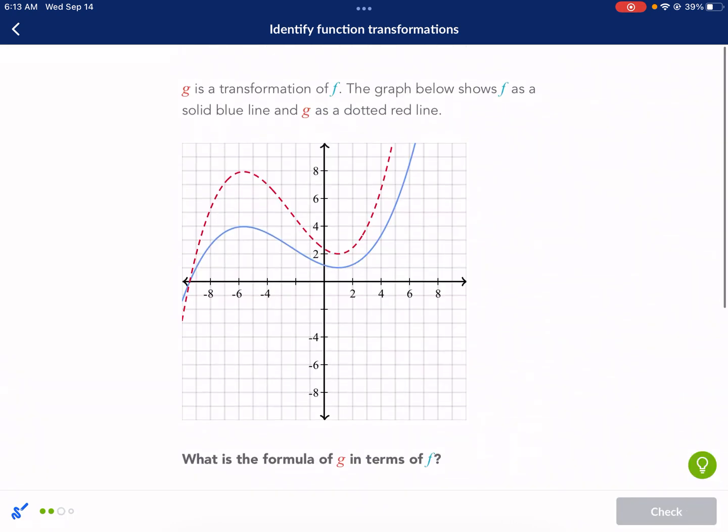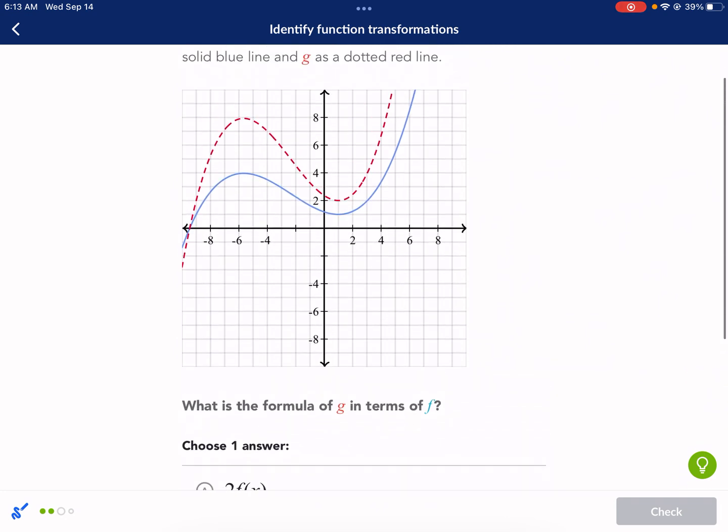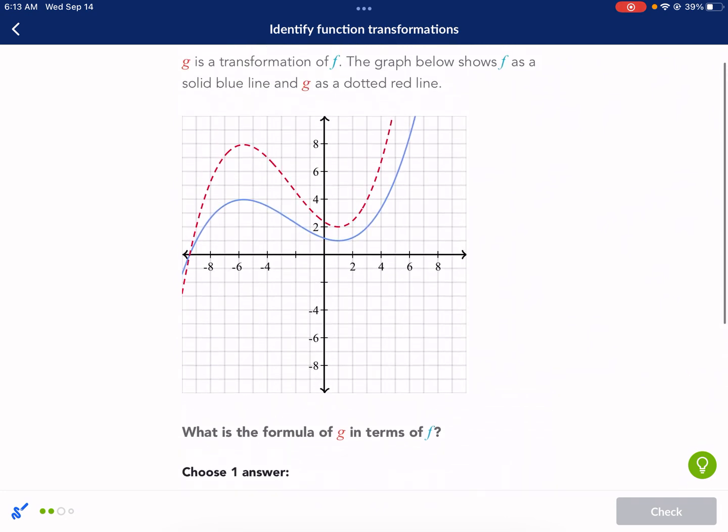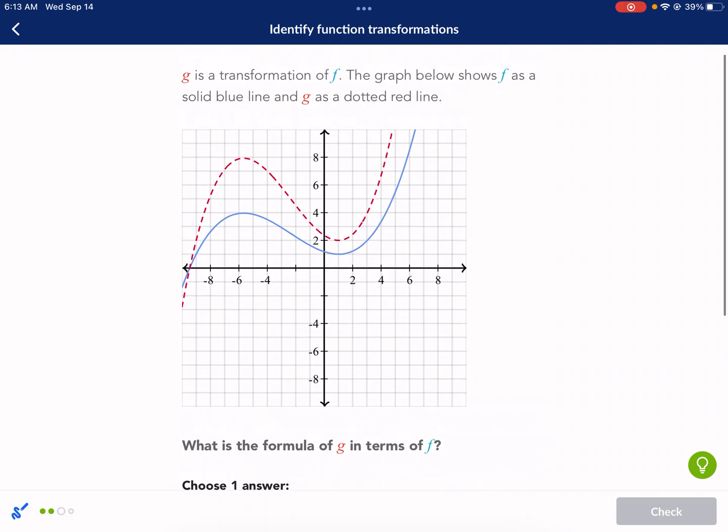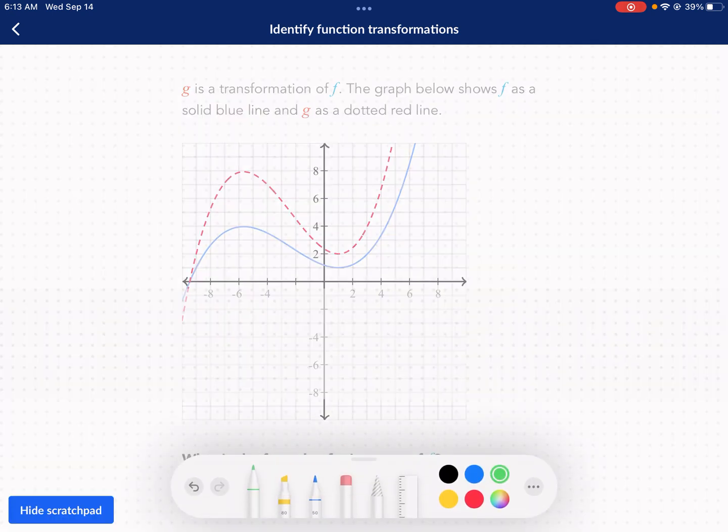Next question. G is a transformation of F. It's the same thing. Look what's happening here. See how it's going up higher than it was before. It's not just moving up. It's changing. So this one isn't just a movement. This one is changing how it behaves. It's getting vertical faster and it's getting down even faster. So everything vertical is getting stretched out.